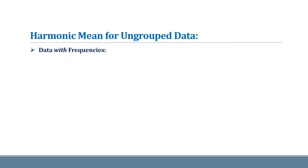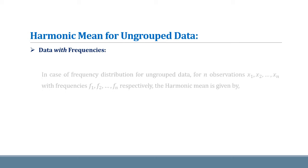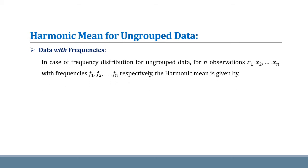Now we see the harmonic mean of ungrouped data when it is given with frequencies. In case of frequency distribution for ungrouped data, for N observations X1, X2 up to Xn with frequencies F1, F2 up to Fn respectively, the harmonic mean is given by the following formula.